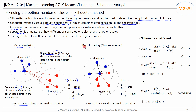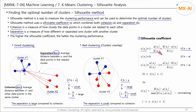Now let's look at the case where clustering is incorrect. In this case, the separation is small compared to the cohesion. If B is less than A, then A over B becomes larger, and 1 minus A over B becomes smaller. We see that 1 minus A over B can be used as a performance measure for clustering. Now, let's define the silhouette coefficient: if B is greater than A, it is defined as 1 minus A over B; if B equals A, the coefficient is 0; and if B is less than A, it is defined as A over B minus 1.